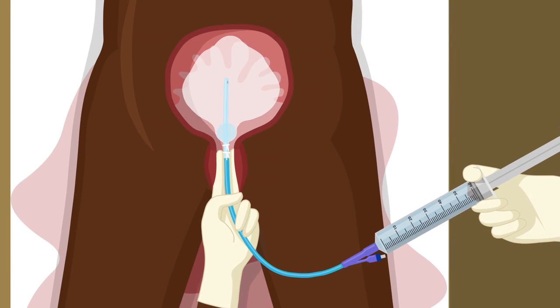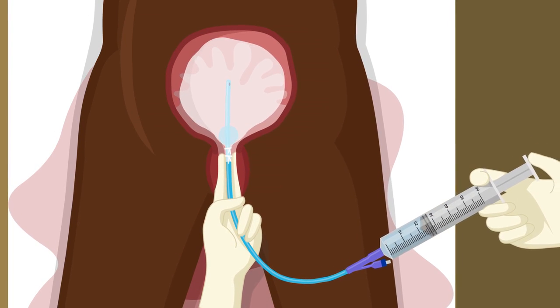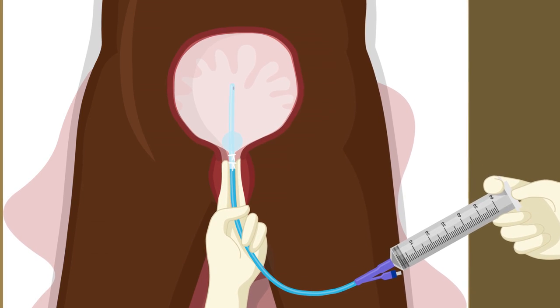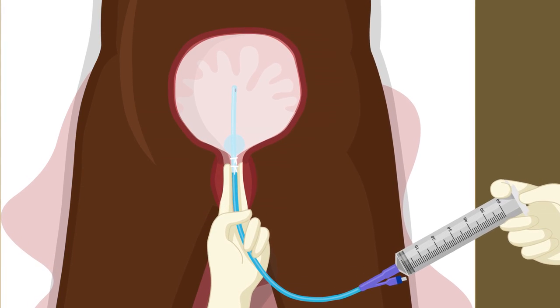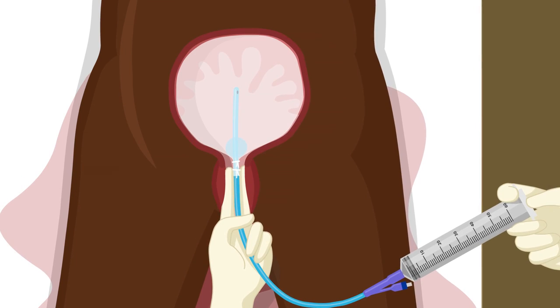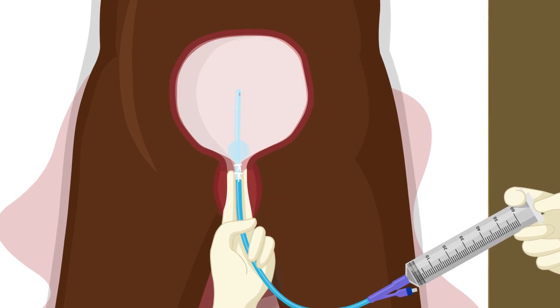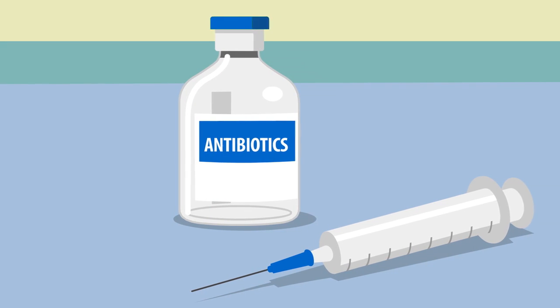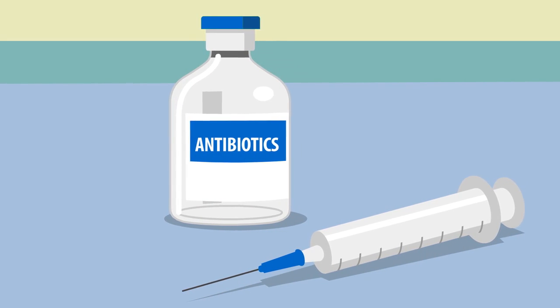As Grace continues to add water, the balloon inflates and puts pressure on the inside of the uterus which is where the bleeding is coming from. This pressure stops the bleeding. Grace then gives Mary a single dose of antibiotics to reduce the risk of infection.